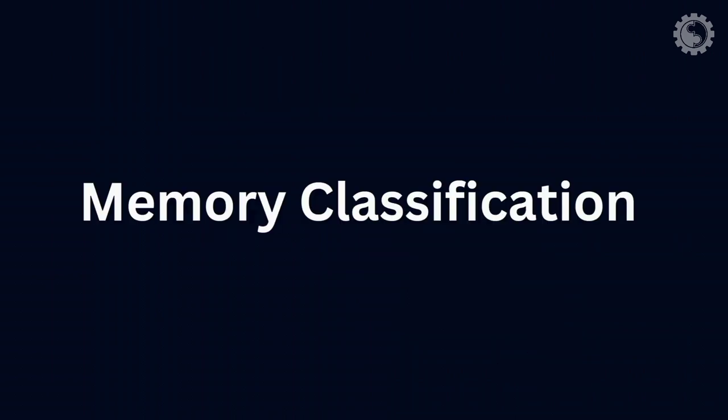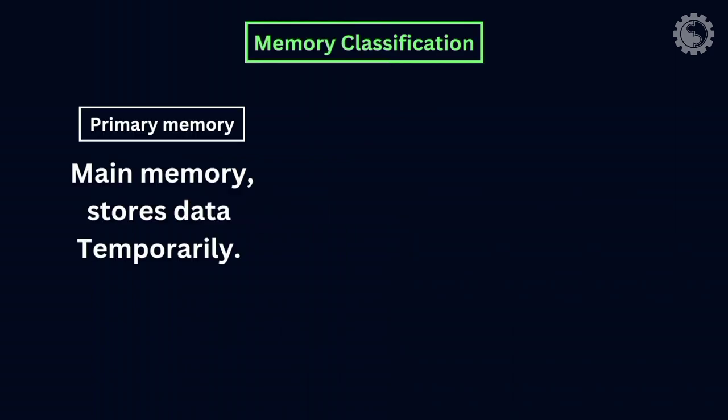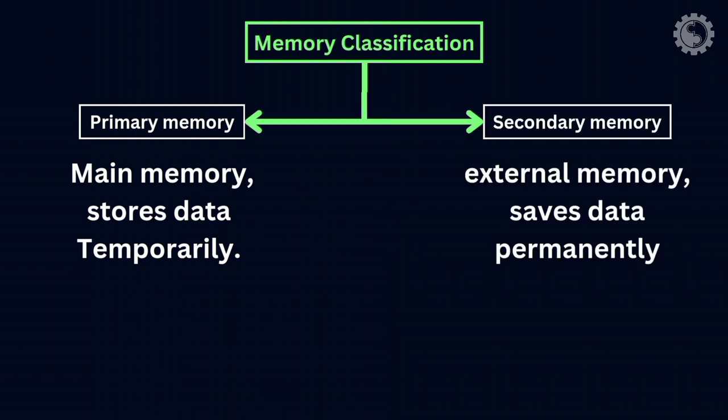In memory classification, there are two classes of memory. One is primary, which is main memory and stores data temporarily. Another is secondary data storage, which provides long-term storage—it is external memory and saves data permanently.